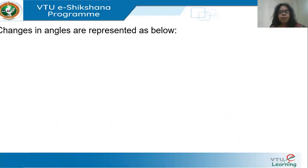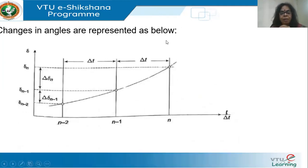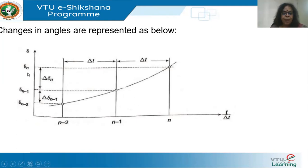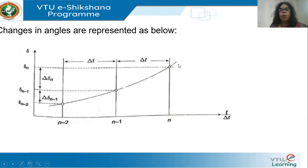Every discrete interval is assumed at uniform intervals of Δt seconds. At the nth interval I call the angle δₙ, at n−1 it is δₙ₋₁, and the change between them is denoted Δδ. The change between any two succeeding intervals can be represented similarly. I have shown a rising graph meaning the angle increases with time, but for certain faults the generator can decelerate also — this is only for illustration.